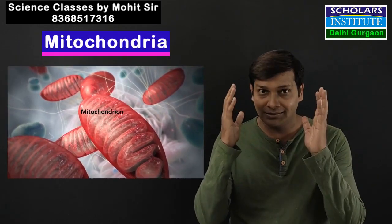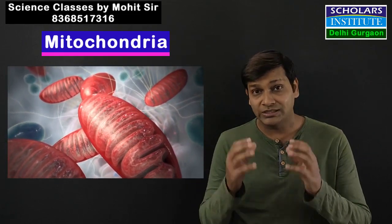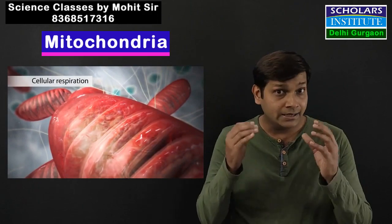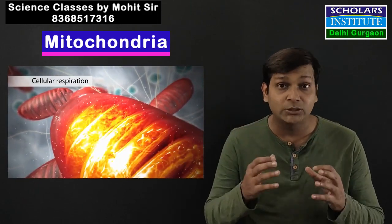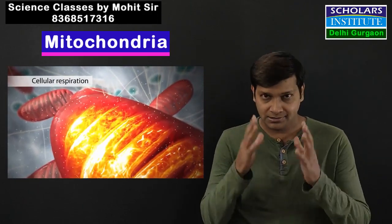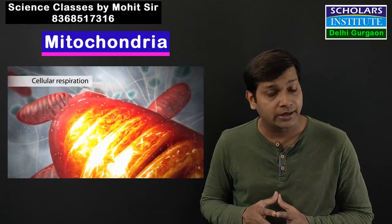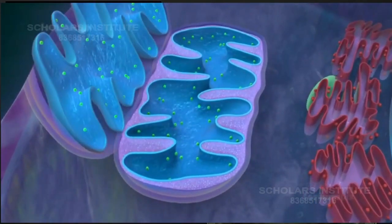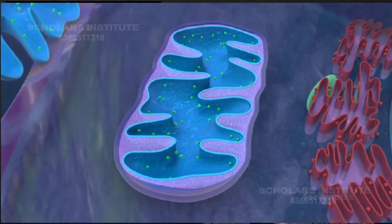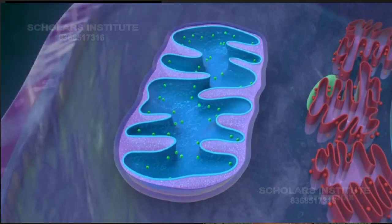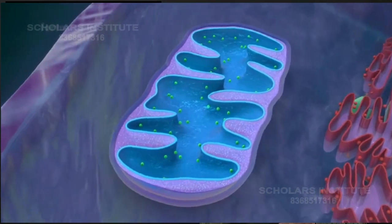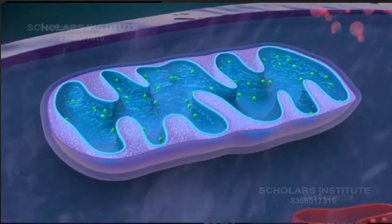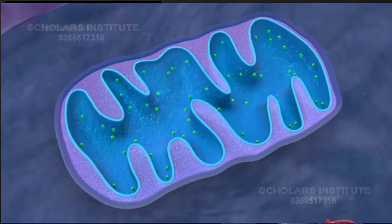Earlier I asked you where the cell gets its energy from. The cell organelle that provides energy to the cell is called mitochondria. Structurally, mitochondria is a double membrane cell organelle — it has two membranes, two layers. The inner layer is folded, and these specific features help us identify mitochondria very easily within the cell.